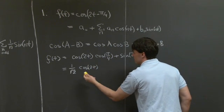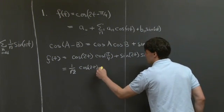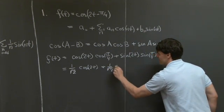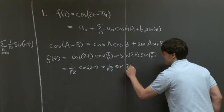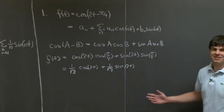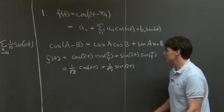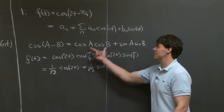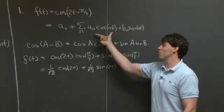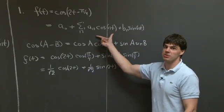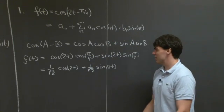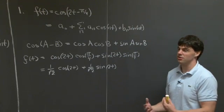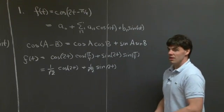Now sine(pi over 4) and cosine(pi over 4) are both 1 over root 2. So f of t becomes 1 over root 2 times cosine 2t plus 1 over root 2 times sine 2t. When we take a look at this expression for f of t, we see that this is actually in exactly the same form we were seeking — the Fourier series representation for f. So this is the end of the problem; we don't have to actually compute any integrals.